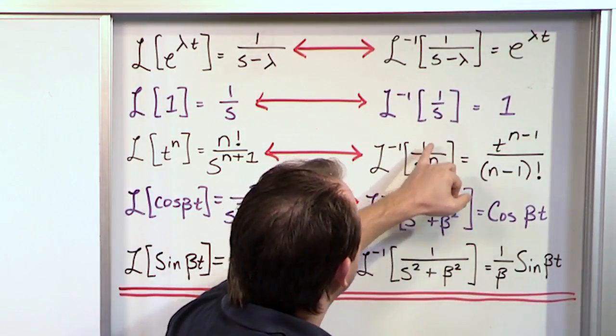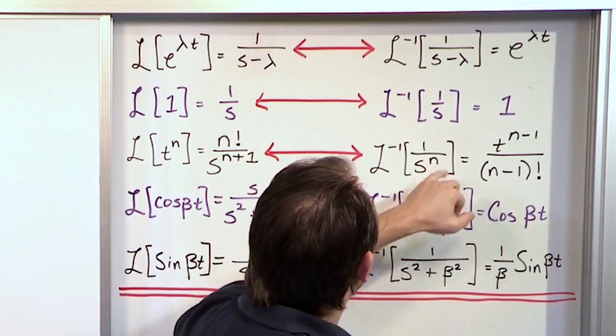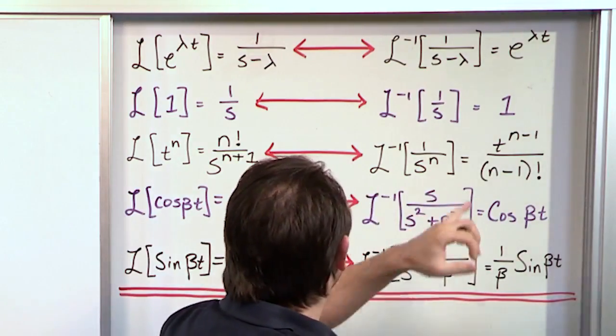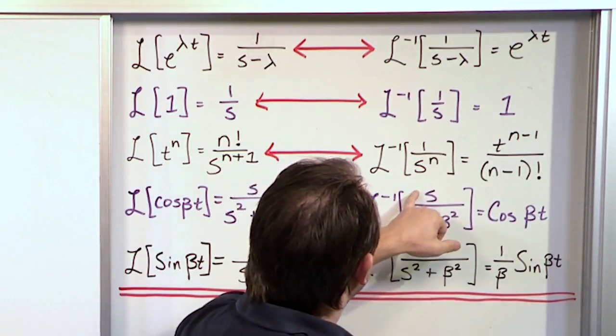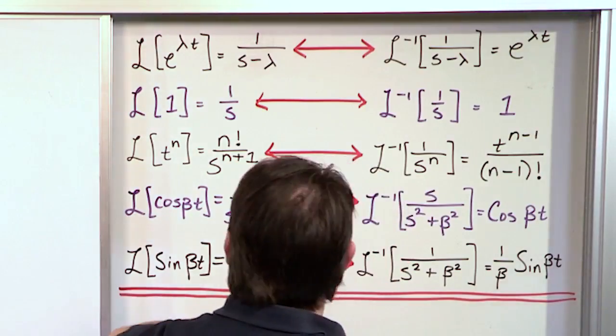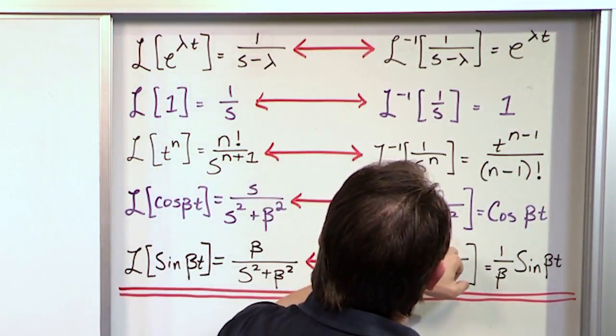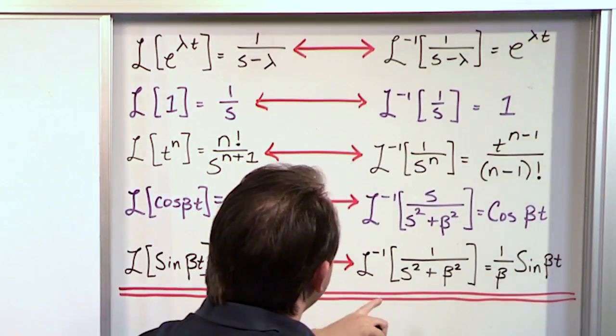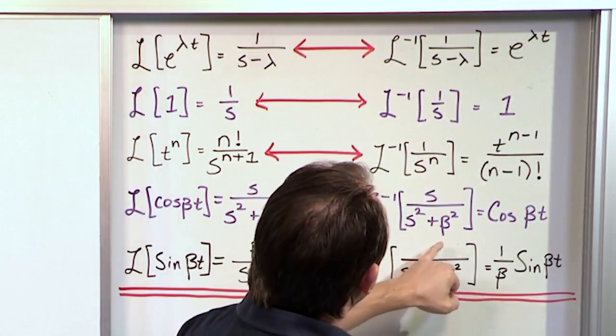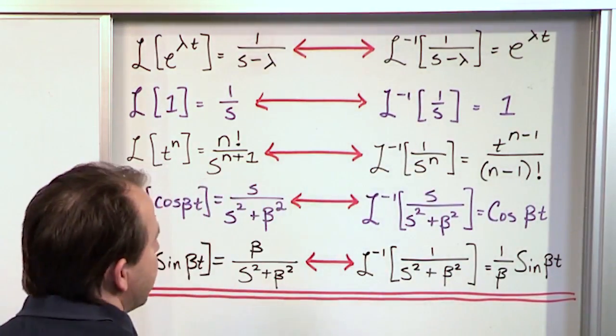Although we do have 1 over s squared, we have a minus or a plus 3 in our problem, so this doesn't work. This clearly does not work because in our problem, we have 1 over s squared plus something. We don't have an s on the top. So we get down to the bottom.